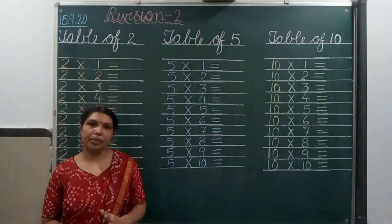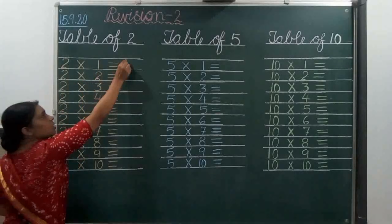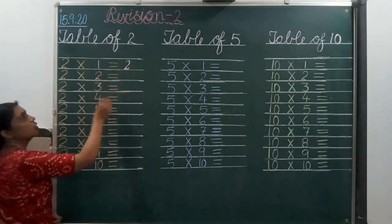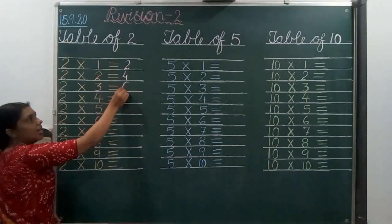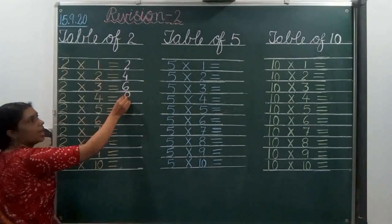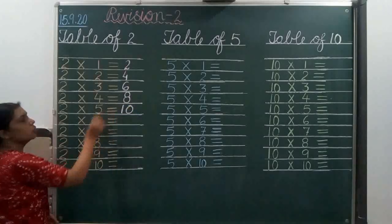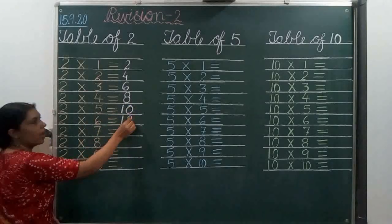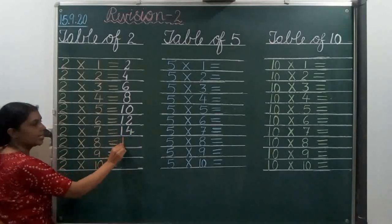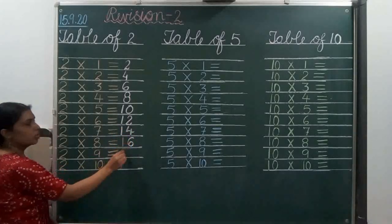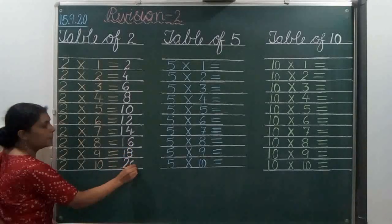Let's revise the table of 2 as well. 2 1's are 2, 2 2's are 4, 2 3's are 6, 2 4's are 8, 2 5's are 10, 2 6's are 12, 2 7's are 14, 2 8's are 16, 2 9's are 18, and 2 10's are 20.